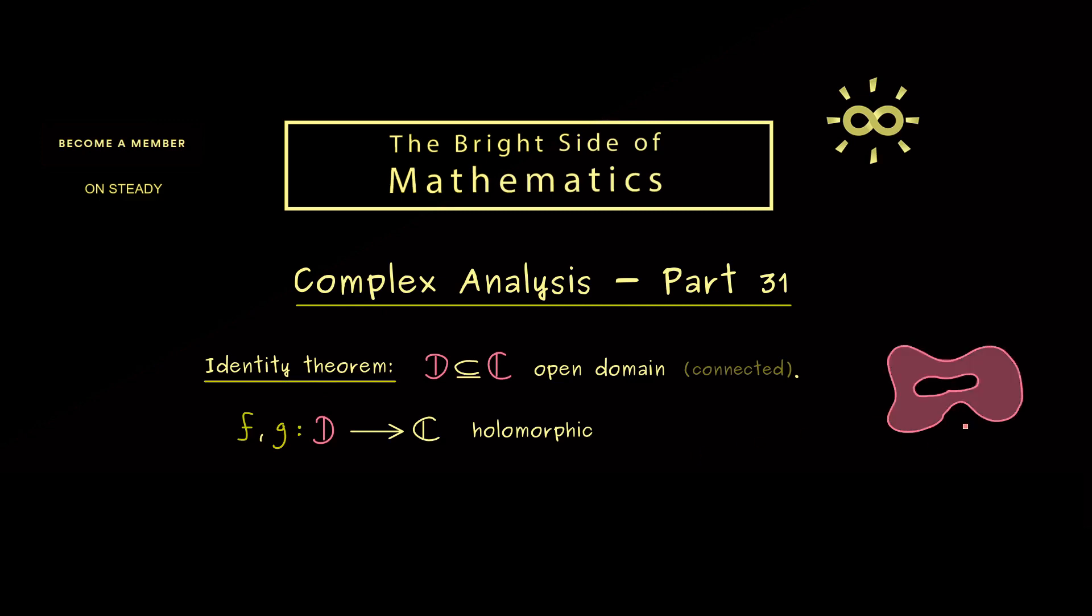On this domain we have two holomorphic functions f and g. We look at the set of all points where both functions have the same value, and if this set has an accumulation point in D, we can conclude that both functions are actually the same. So the conclusion is f equals g. This is the identity theorem as proven in the last video.